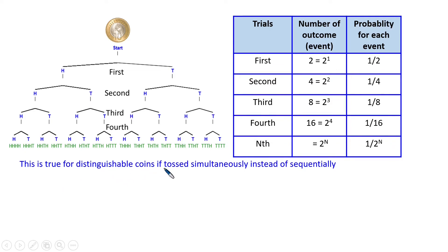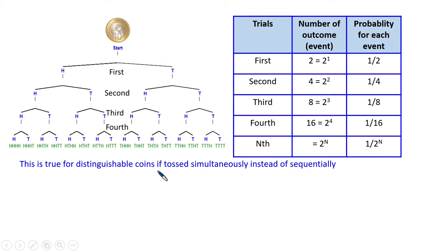This is true if you take two coins simultaneously — either you will get head-head or head-tail. Suppose simultaneously you toss three coins, so you can get eight combinations. Similarly, if you toss four coins simultaneously, you get 16 combinations. You can take distinguishable coins: here we have three heads and one tail, which we can distinguish by sequence. So this is true for distinguishable coins, if tossed simultaneously instead of sequentially.